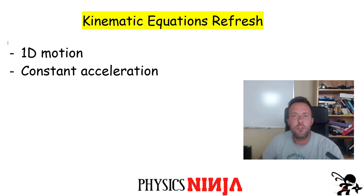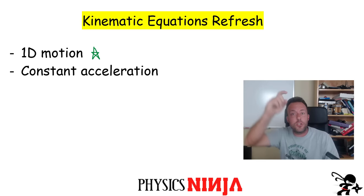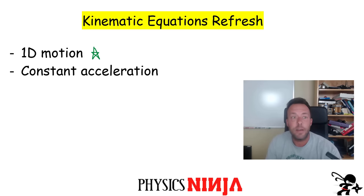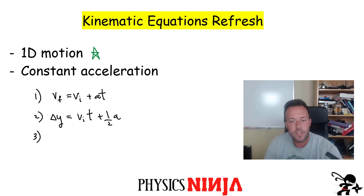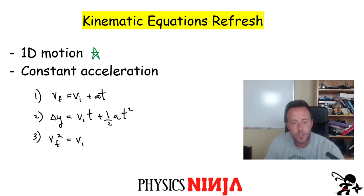First, I want to do a quick refresher on our kinematic equations. I'm going to write down three equations, valid as long as two conditions are met: we're looking at 1D motion, and the acceleration is uniform or constant. The first equation is V_final = V_initial + a·t. The second is displacement = V_initial·t + ½·a·t². And the third is V_final² = V_initial² + 2·a·ΔY.